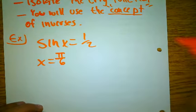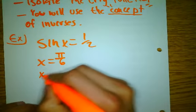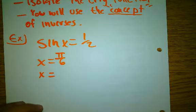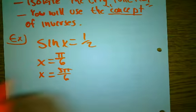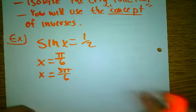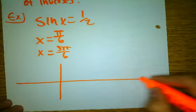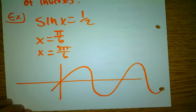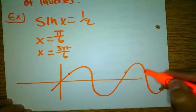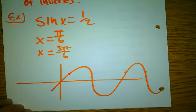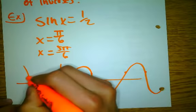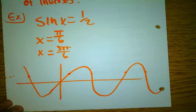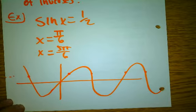Sine is 1/2 at pi over 6 and 5 pi over 6. But that only tells you two angles. Notice that I didn't give you any restrictions. If you recall, sine looks something like a wave, and when it equals 1/2, it keeps going and going in both directions. So we have a whole bunch of angles that have a sine of 1/2.